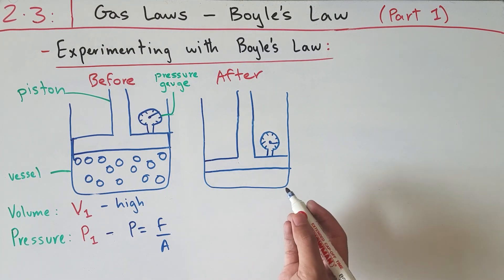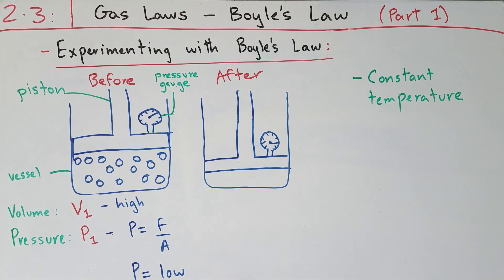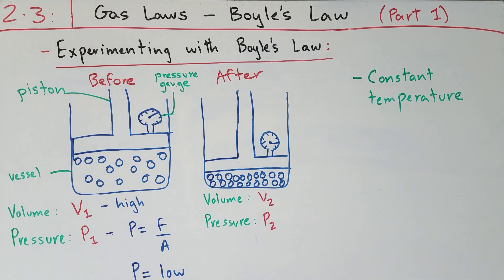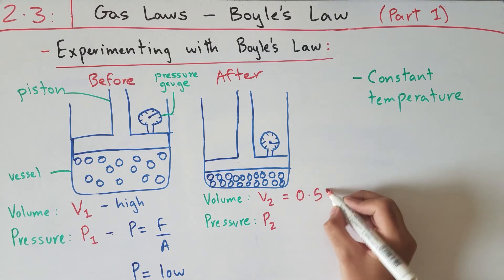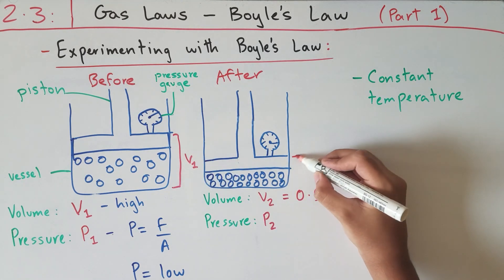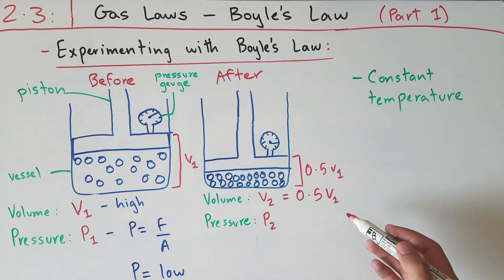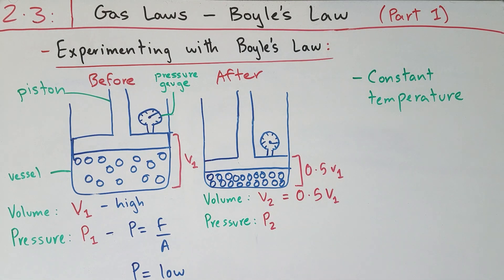If we divide some amount of force by a higher area, the pressure is going to be low. To make things fair, we have to make sure that the temperature of the system is constant. Now let's look at what happens after you compress the gas using the piston. If you bring the piston down by half, your volume V2 equals 0.5 times V1.